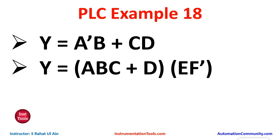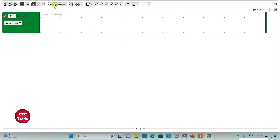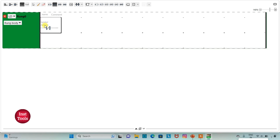I will insert one normally closed contact. There is an OR gate with A-not-B and CD. So I will insert one normally closed contact, and then since there is an OR gate with A-not-B and CD, I will insert two more normally open contacts.